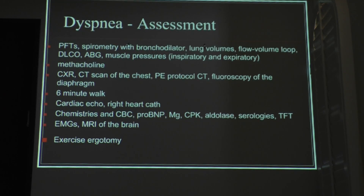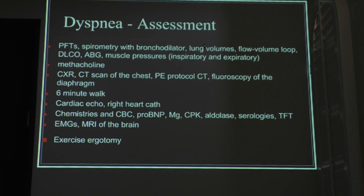Imaging-wise, you have the chest x-ray, CT, and the PE protocol. The PE protocol is different from a regular CT scan — it's with contrast. You want to look inside the actual vessels. Without contrast it's a useless study for PE. If contrast is contraindicated — severe allergy, advanced kidney disease, or patient refusal — then you need to order a VQ scan, which is the ventilation-perfusion scan.